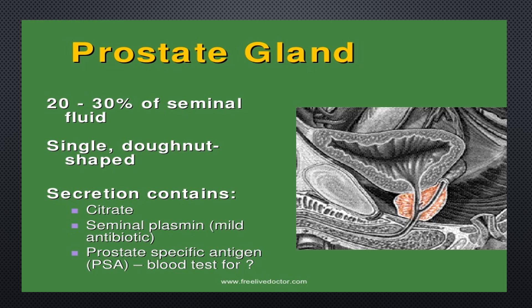The prostate secretes prostate-specific antigen (PSA). PSA is a protein made by cells in the prostate gland — both normal cells and cancer cells. The level of PSA in blood is measured in nanograms per milliliter. A blood test can detect prostate-specific antigen levels in men, helping to identify prostate conditions.